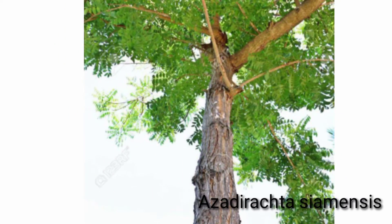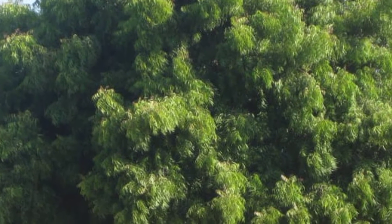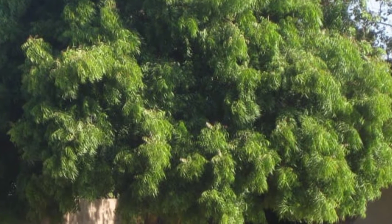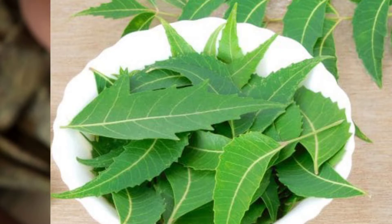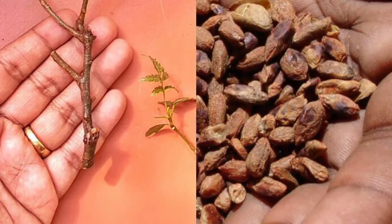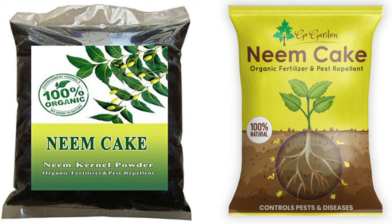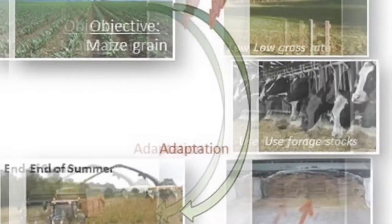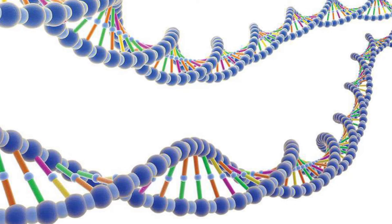Azadirecta siamensis is also known as Siamensis neem or Thai neem. It has a larger leaf and appears more robust and vigorous than the other variety. It has a wide distribution in Thailand. Neem leaf is used for leprosy and eye disorders. It is also propagated through seed and stem cutting. Neem cake is used as fertilizer and as a pest-control plant. Wide distribution of neem trees in varying climatic zones confers it greater adaptability, which is most likely due to a broader genetic base.